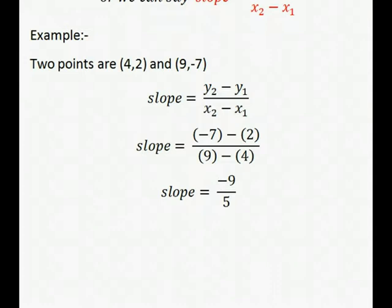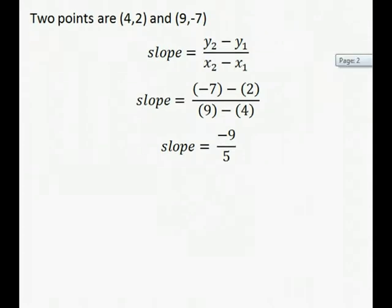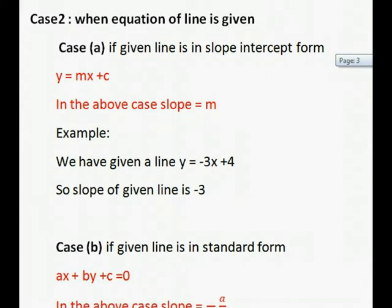Now case 2. Case 2 is divided into four subcases. First subcase (a): if given line of equation is in slope intercept form y equals mx plus c, in this case slope of the line is m.